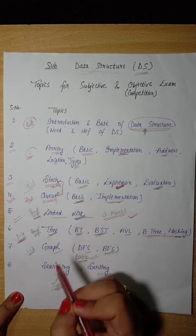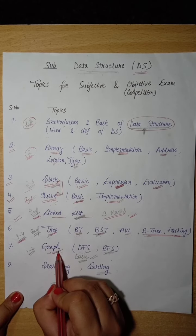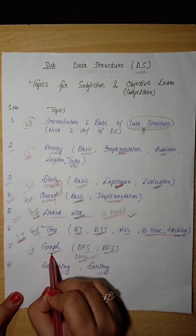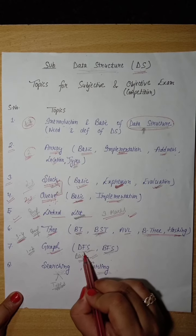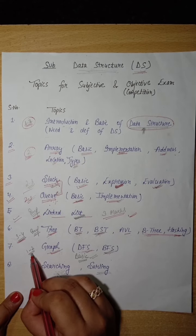Next, our topic is Graph. We will see what are the basics of graphs, what are the types of graphs, how we implement them, and we will study DFS and BFS. There is a question of 1 to 2 marks from this topic.